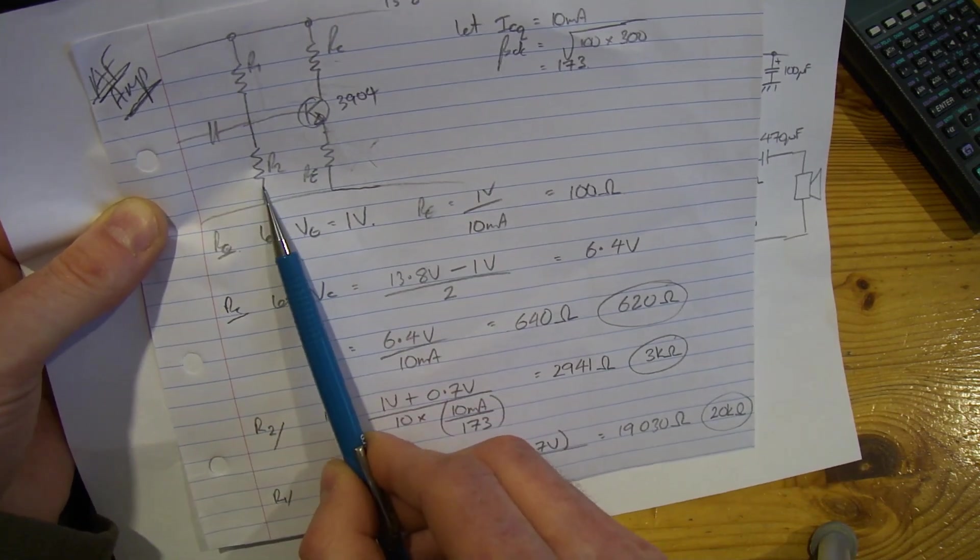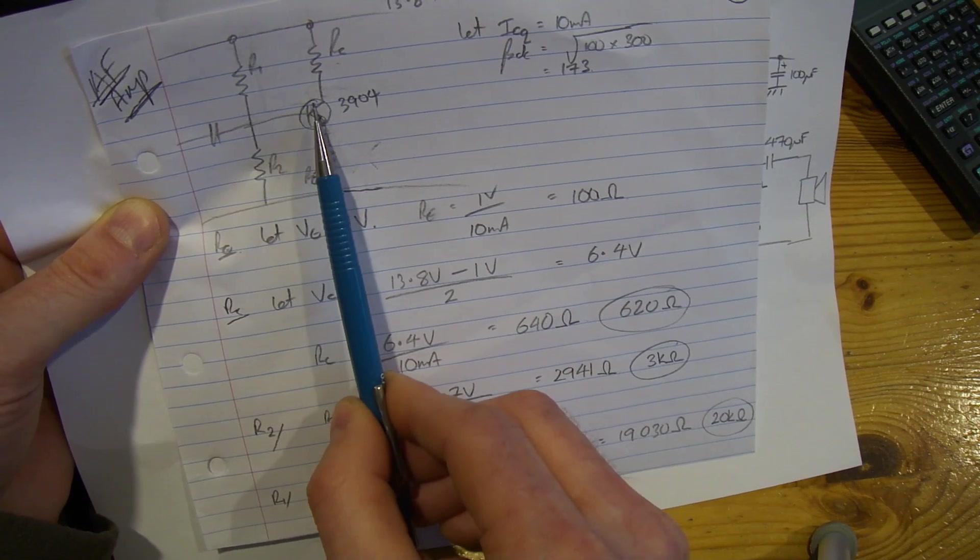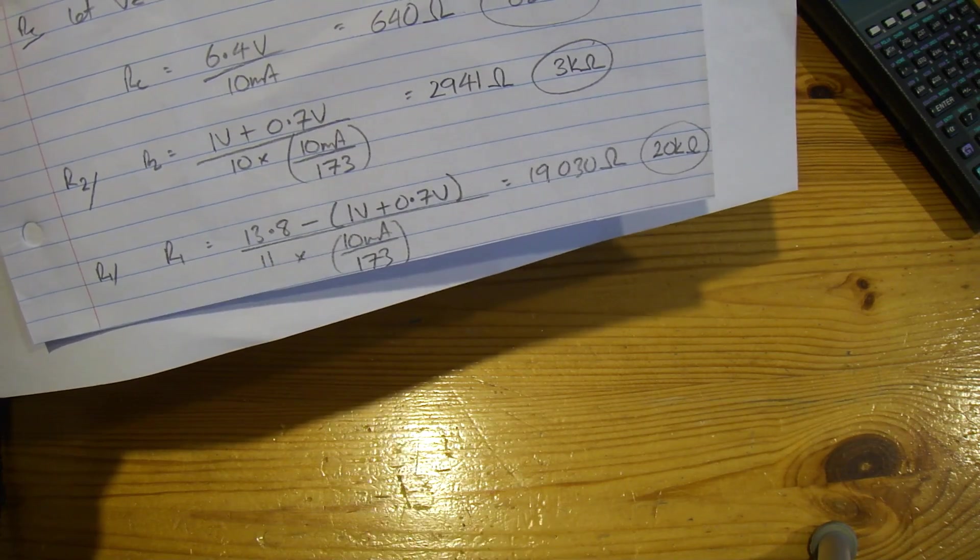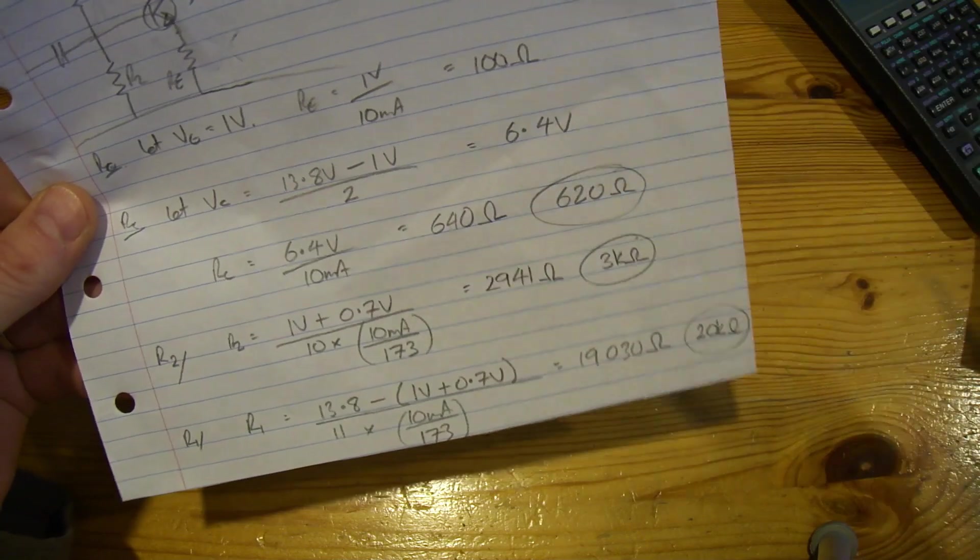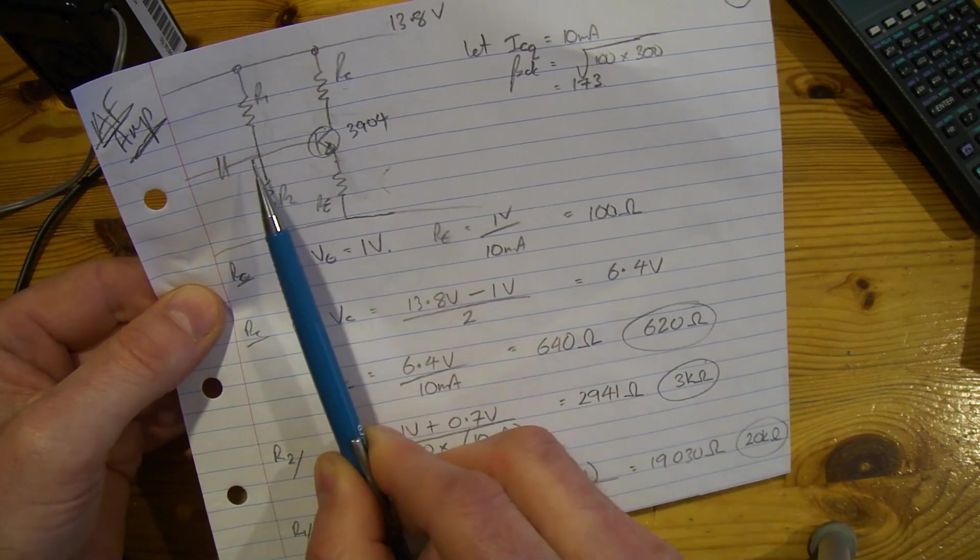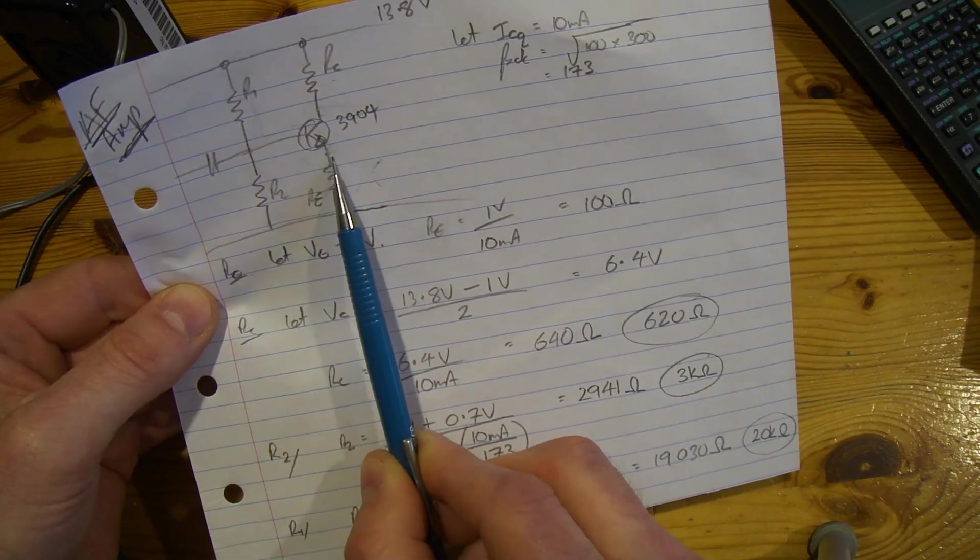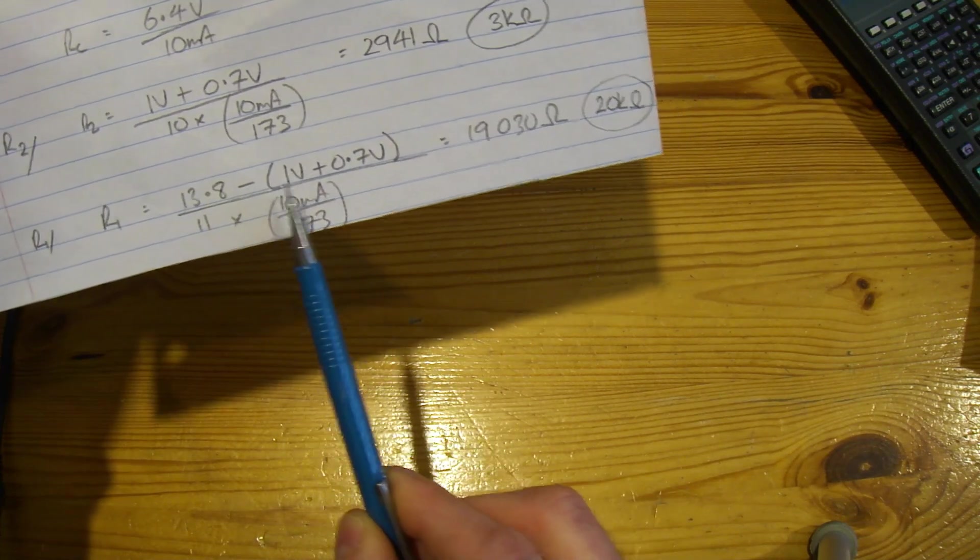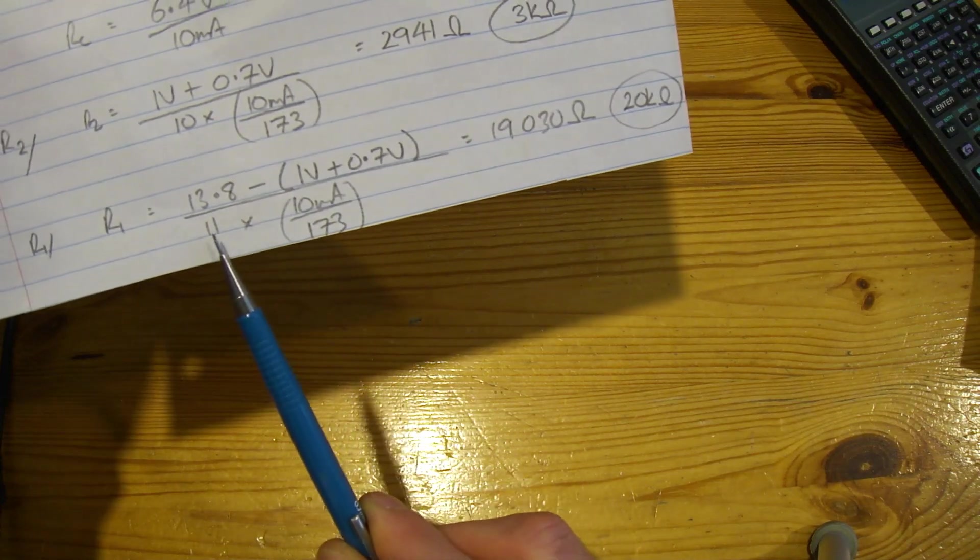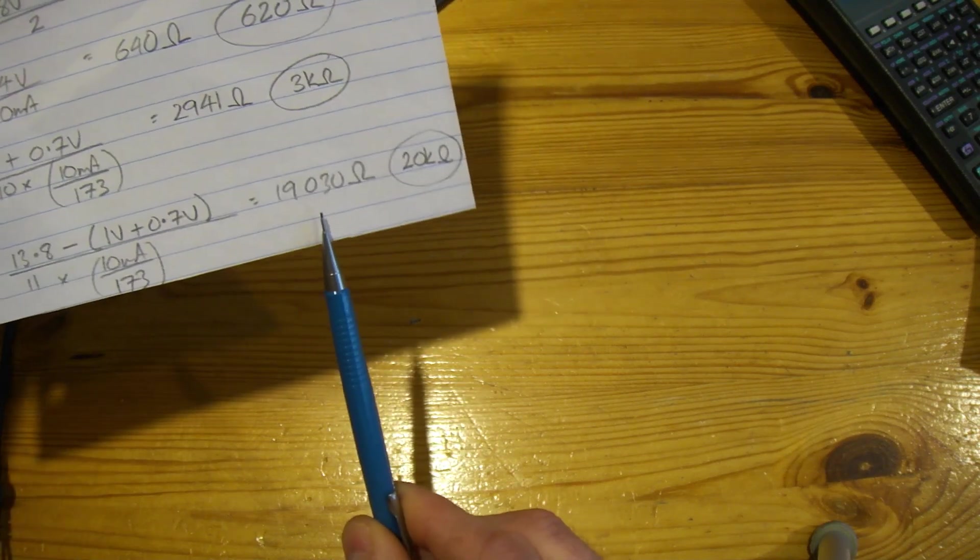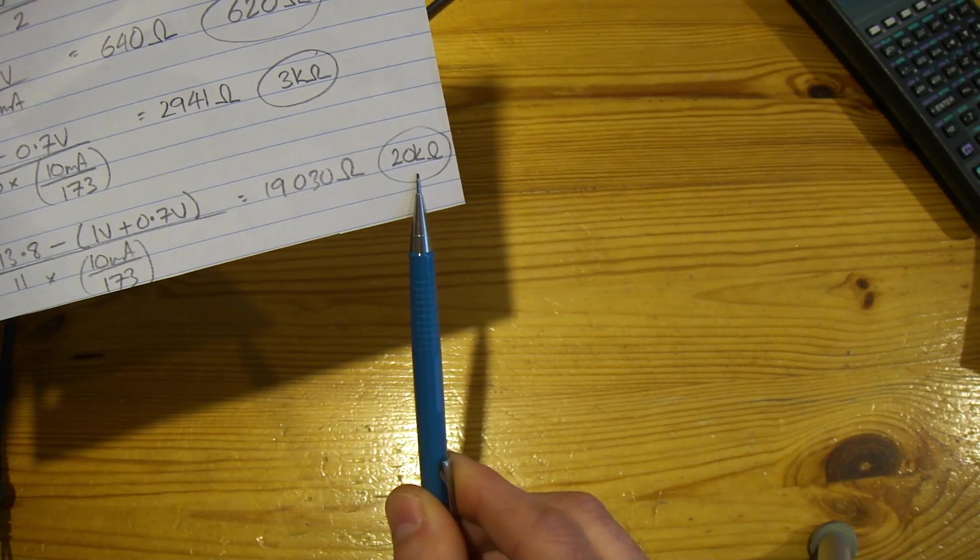For R1 here, we've got our quiescent 10 times base current, but now we've got added to it, I do electron flow, one additional lot of base current. So similar equation, but it's now going to be 11 times flowing through that. Let me just get rid of that bottom bit of paper. So again, from Ohm's law point of view, we need to work out what the voltage is across R1. Well, it's going to be 13.8 volts minus whatever that voltage is. We just said before that that voltage there equals 1 volt plus 0.7. So we've now got enough to work out what that value is going to be. 13.8 volts minus the voltage at the base, divided by 11 times now our base current, IB. Comes out at 19030 Ohms, so I'm going to use 20k Ohms as the standard value. And that's what we have here.